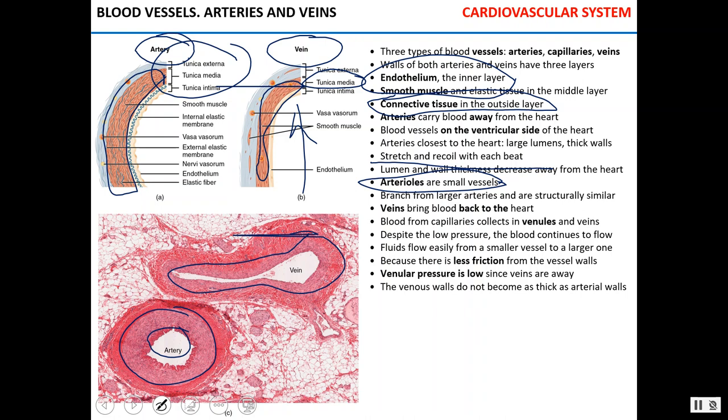Veins take blood to the heart. Blood from capillaries is collected in venules and then in larger veins. Blood continues to flow despite relatively low pressure in the veins. As a rule, the highest pressure is in the arteries, because fluids move from smaller vessels to larger ones with less friction, and there are valves in the veins that prevent backflow away from the heart. Blood pressure and blood flow rate are both higher in the arteries, and arteries have thicker walls.